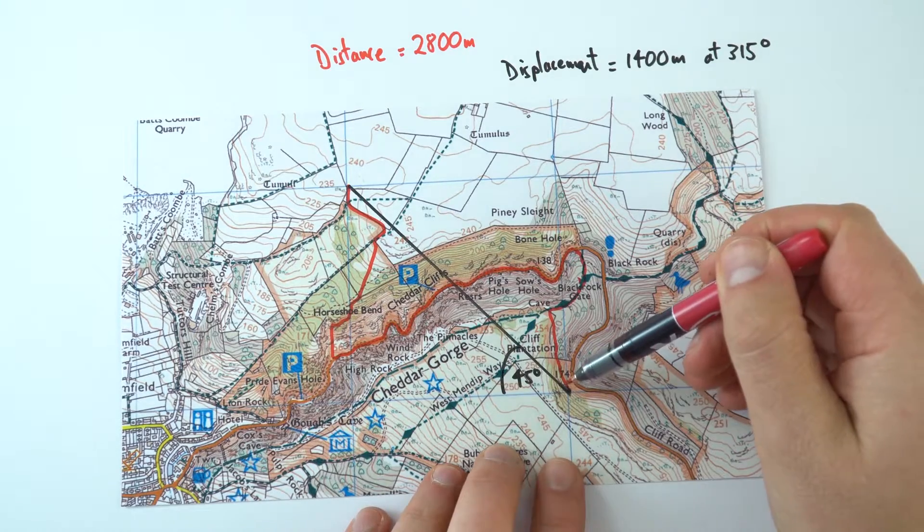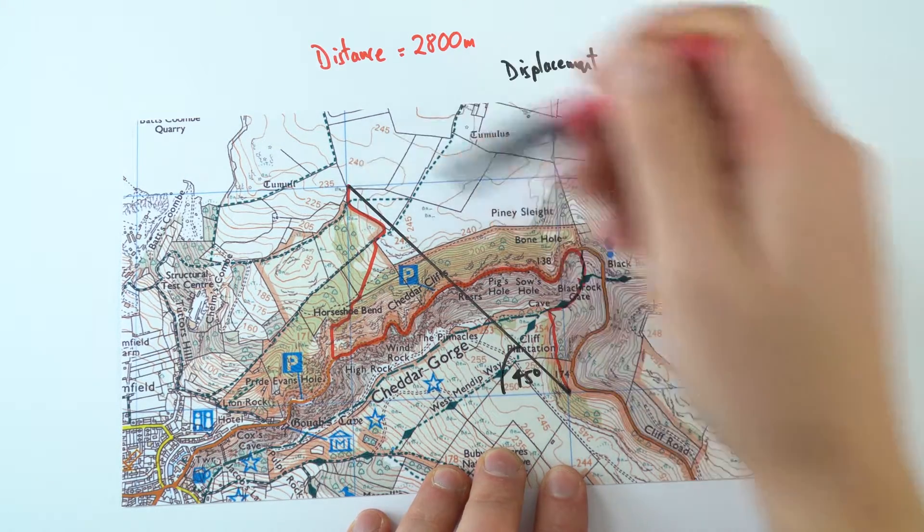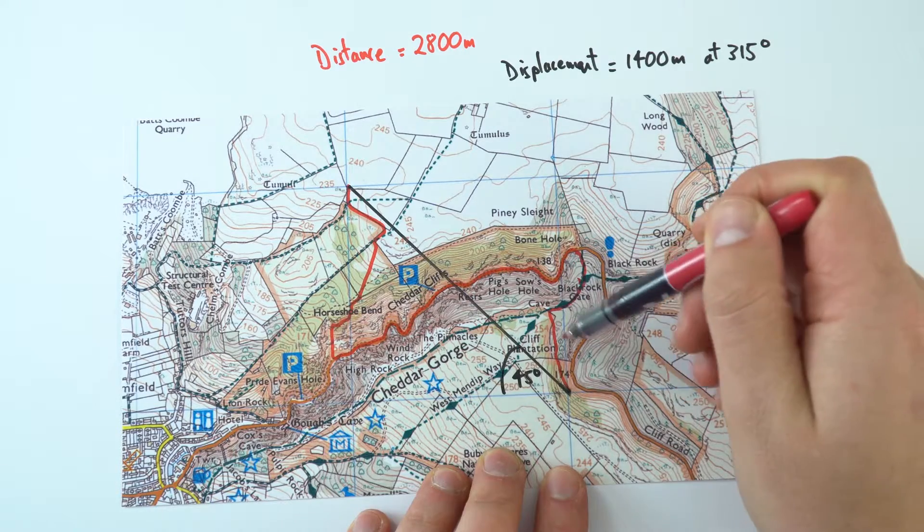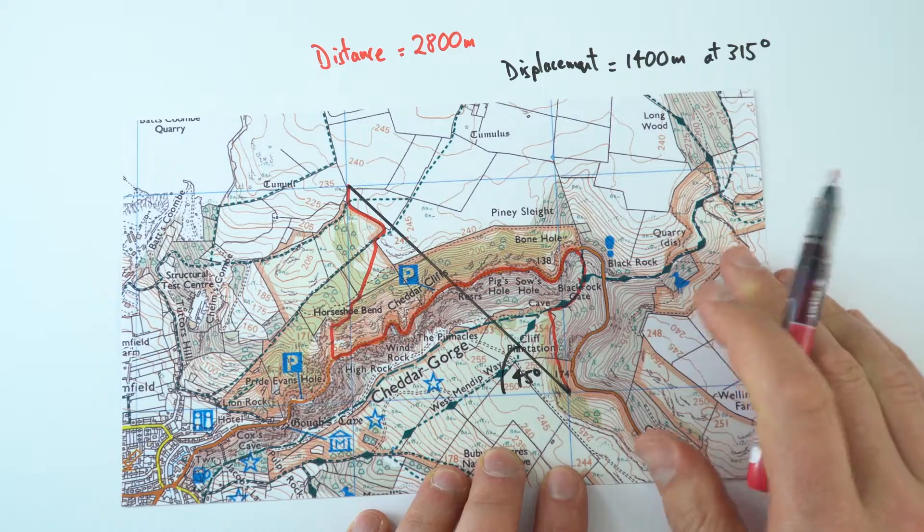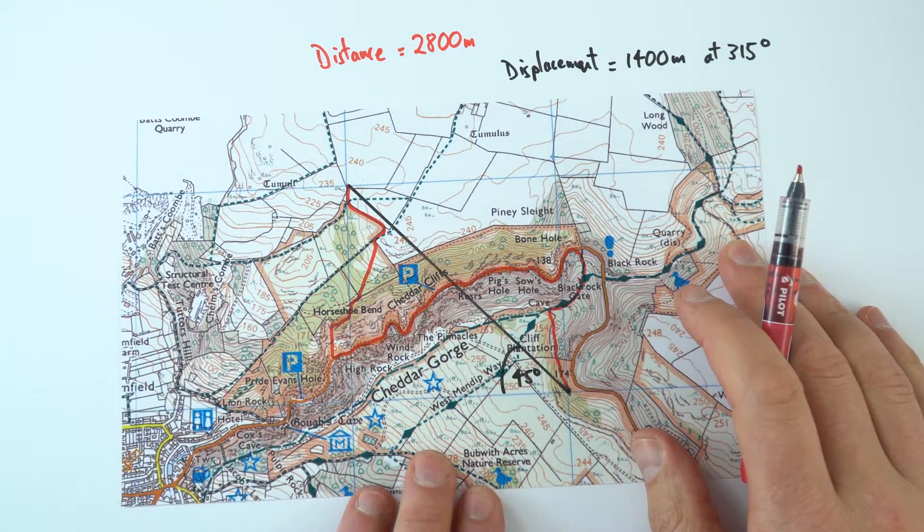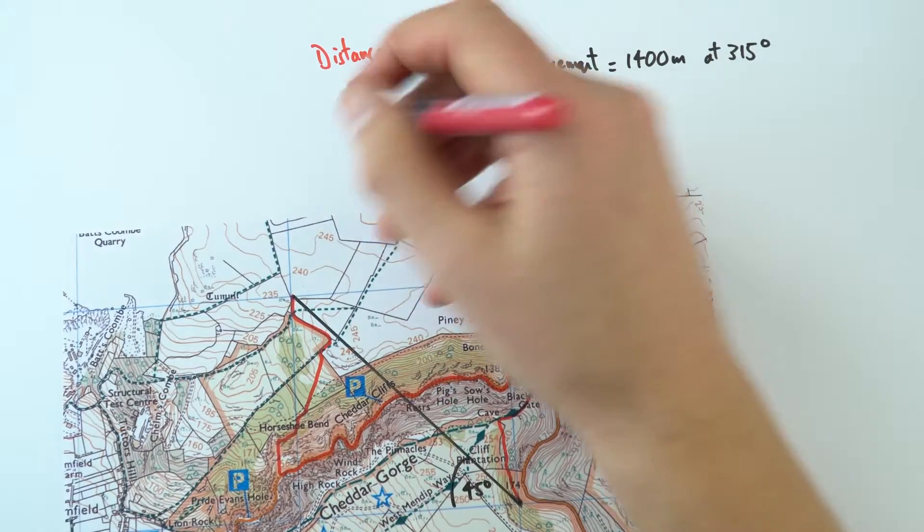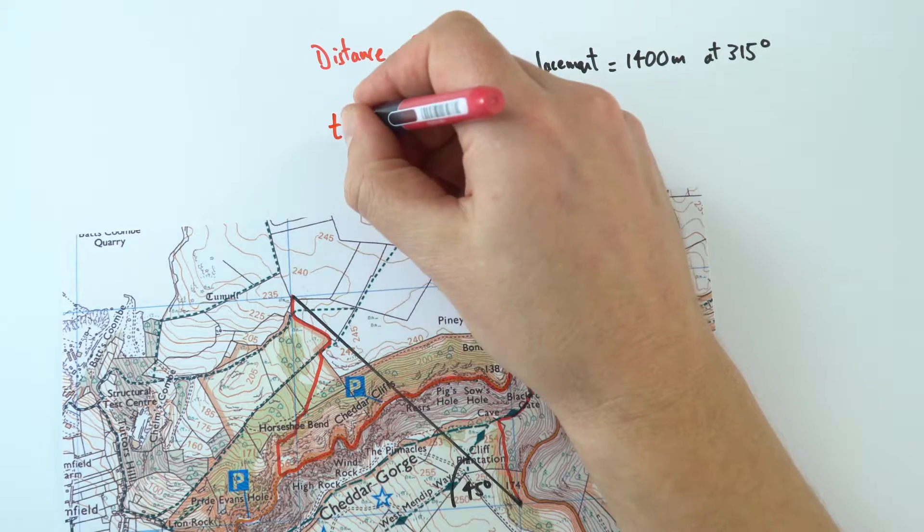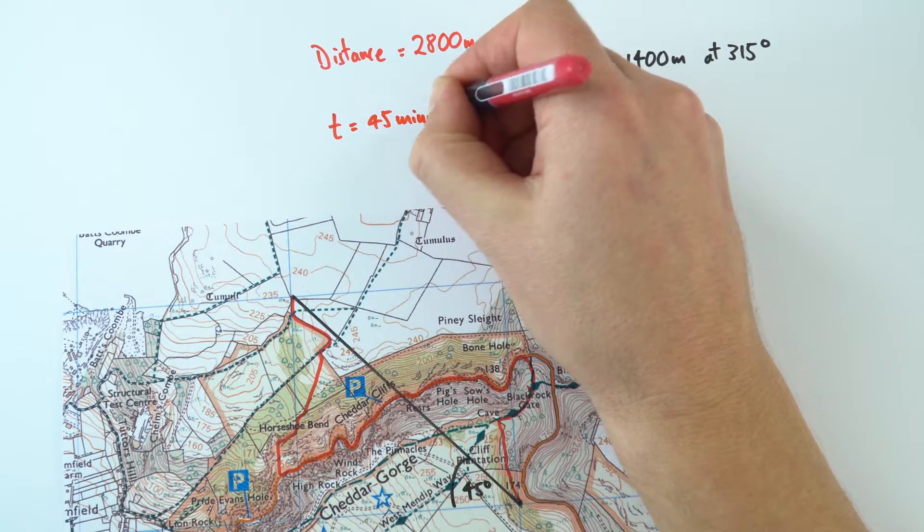So this line in red is the journey that I took when I went from this point down here, up to this point up here. So I kind of had a bit of an adventure going through the woods, up some cliffs and across some fields. Now I want to work out how quickly I was actually traveling. Now the distance I actually walked was 2,800 meters. And actually when I did this, the time it took me was equal to 45 minutes. And I just kind of recorded that on my watch as I was doing this.